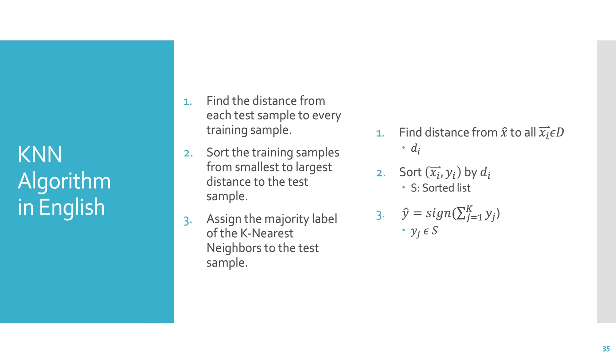So in English, we're finding the distance from every training sample to the test sample. And then we're sorting the training samples from smallest to largest distance to the test sample. And then we're assigning the majority label of the k nearest neighbors to the test sample.